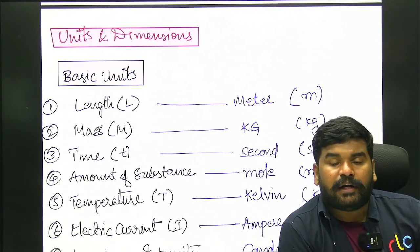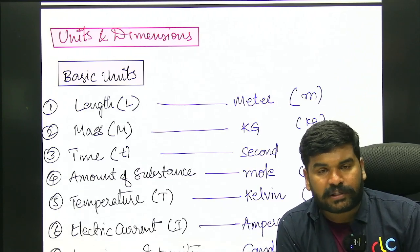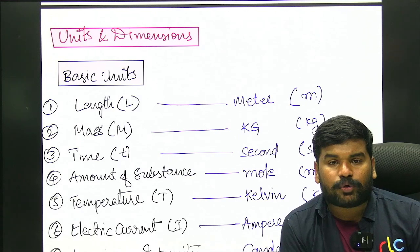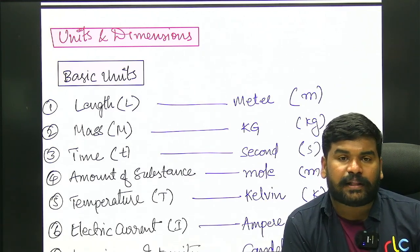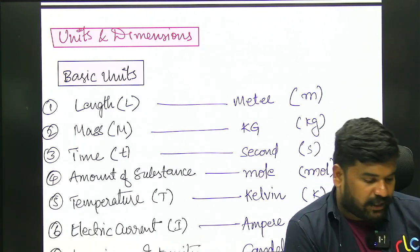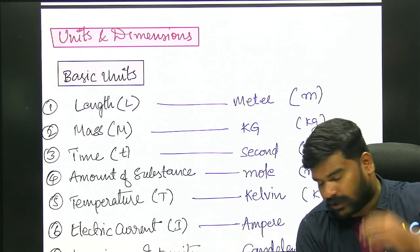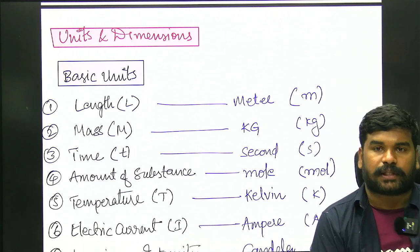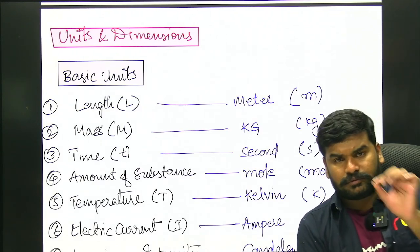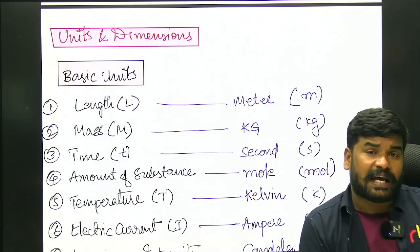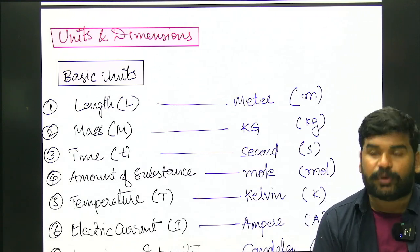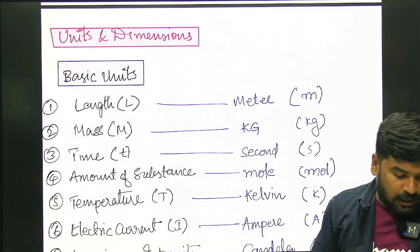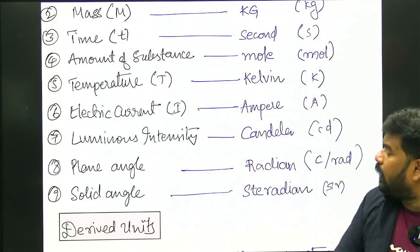Next, we will discuss units and dimensions. In this chapter, we will use different types of units and dimensions. So we will discuss some physics concepts. We will discuss units in two categories: first, we will discuss basic units, and second, we will discuss derived units.